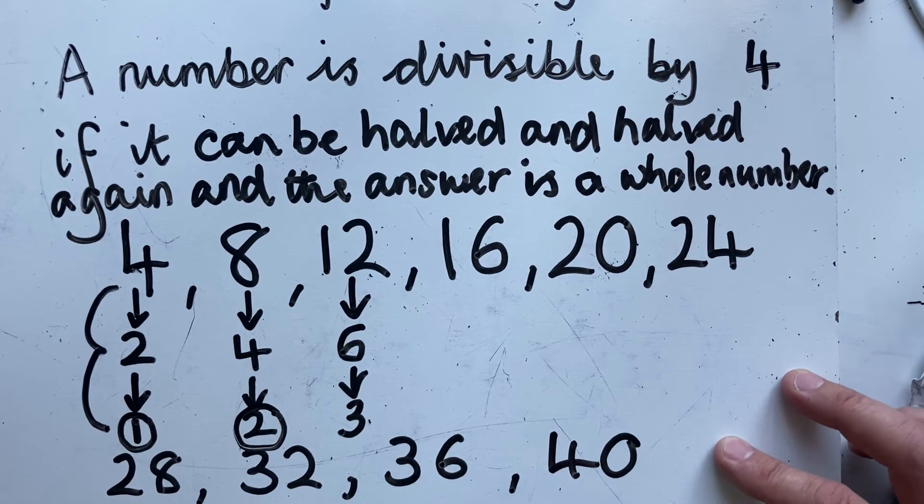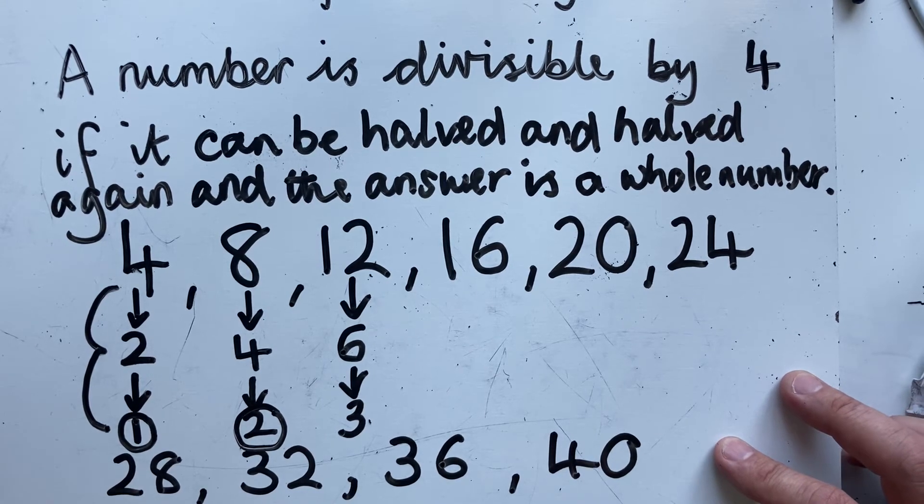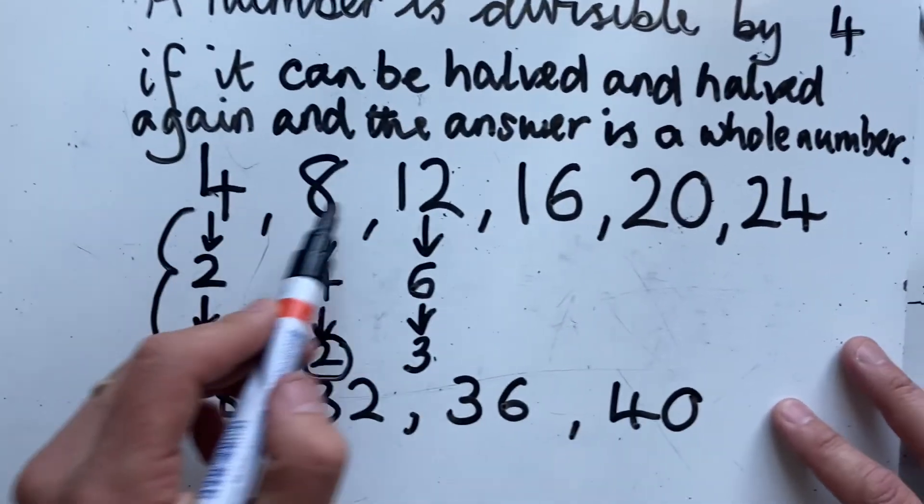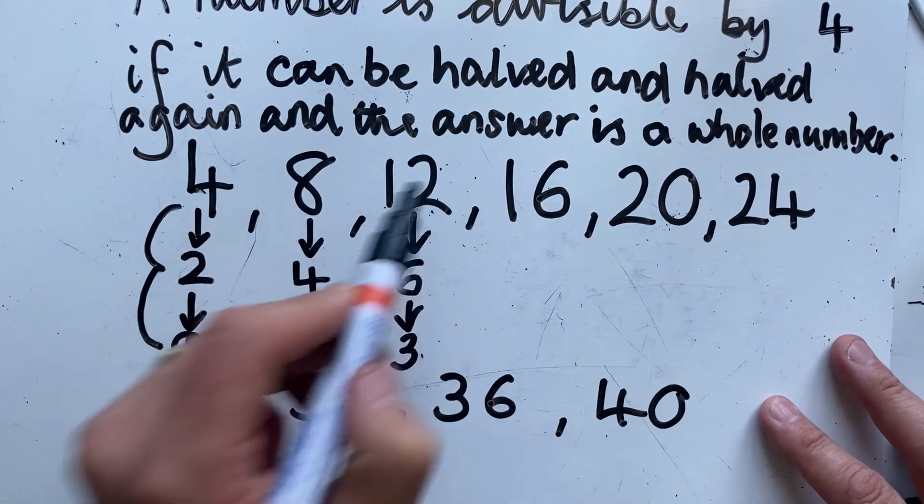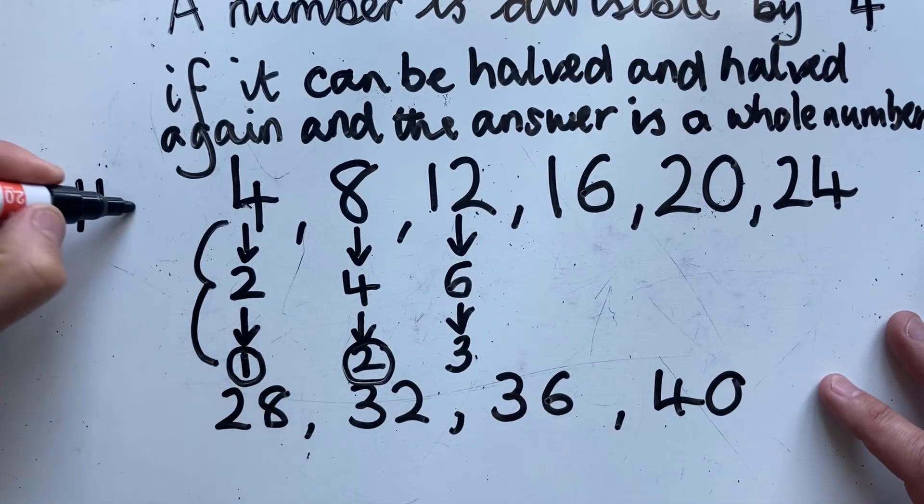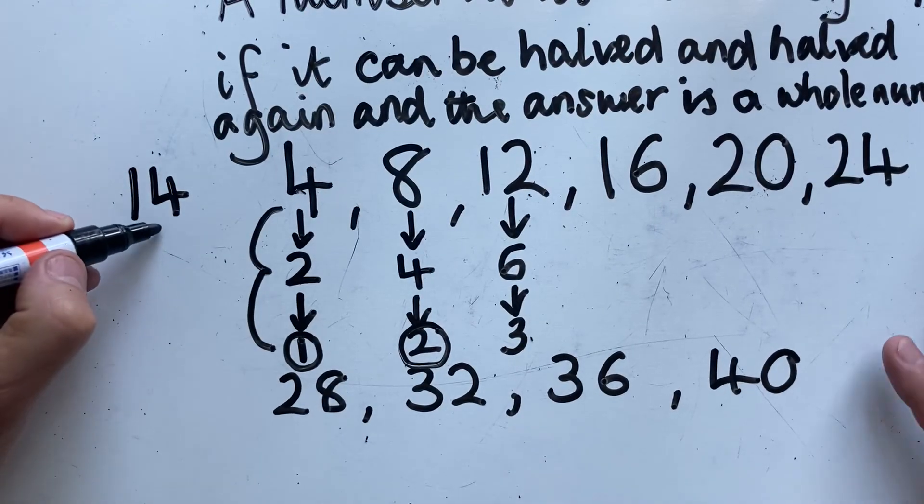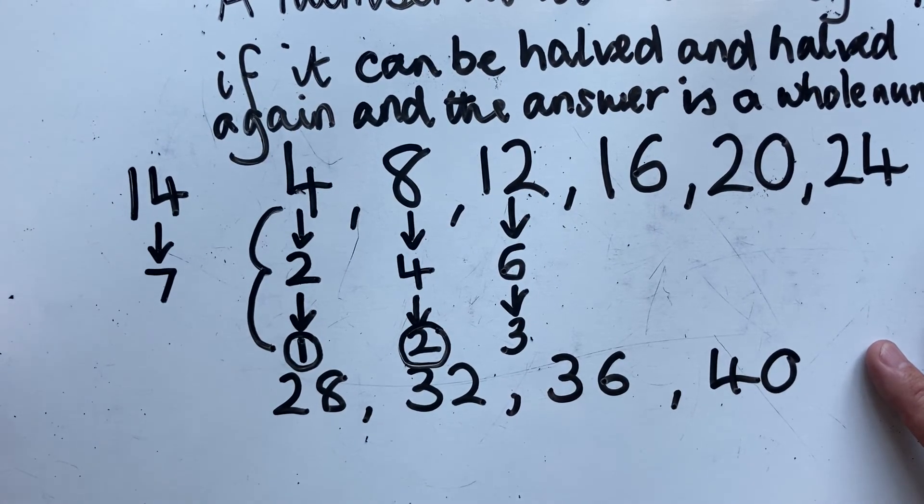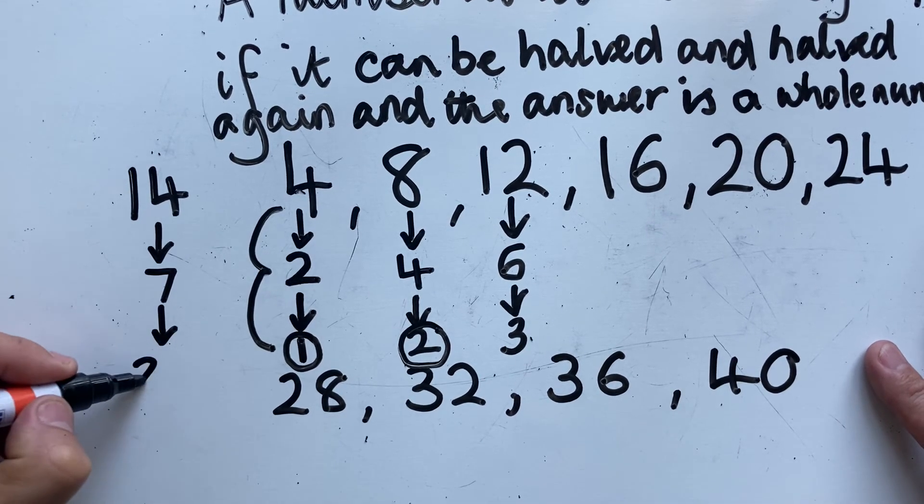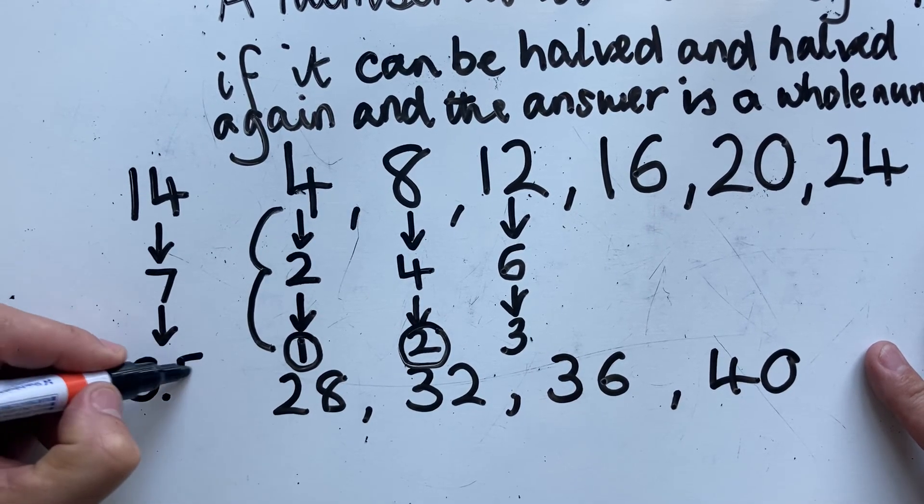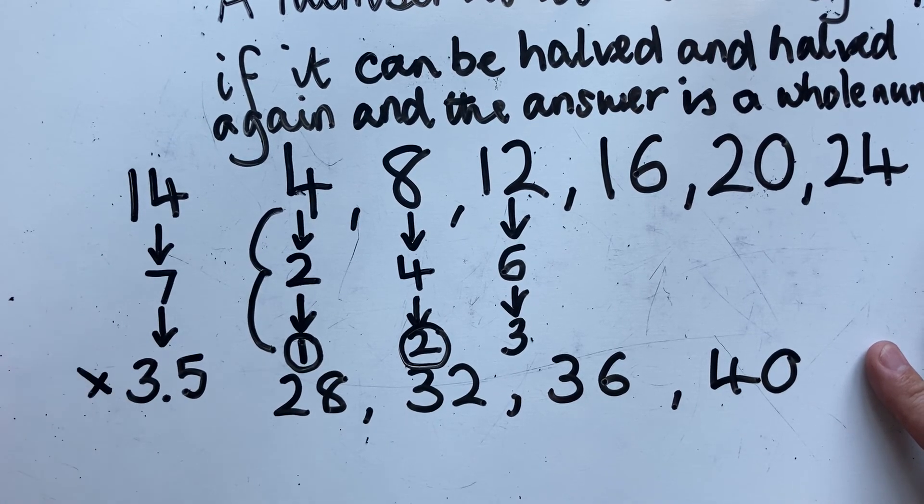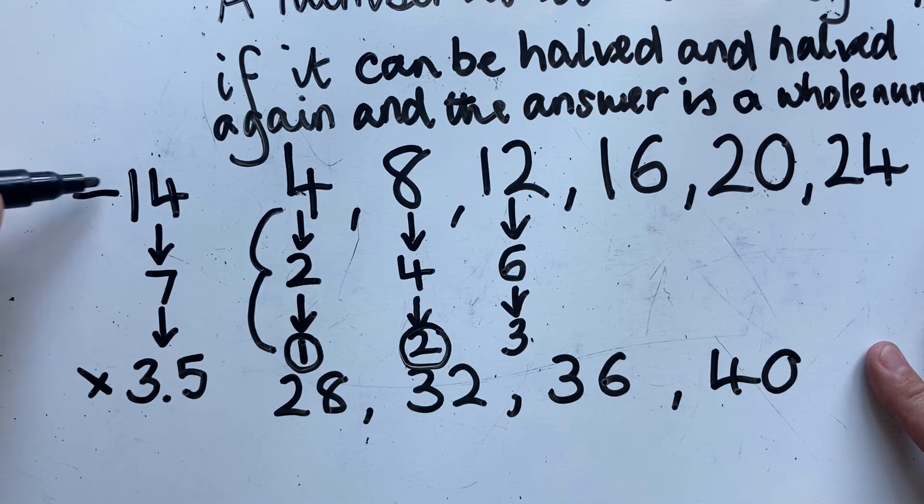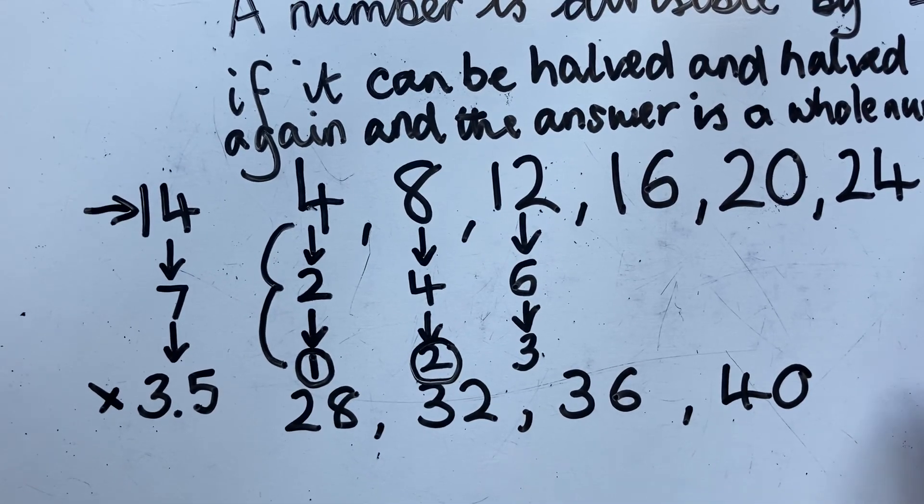Now let me show you a number which is not a multiple of 4. Let's choose a number that's around these. So let's try 14. Can I halve that? Yes I can. Can I halve that again? Well I can but it gives me 3.5. Is 3.5 a whole number? No it isn't. So that means my starting number is not divisible by 4.